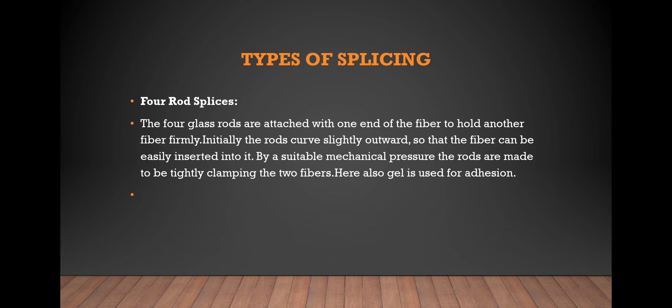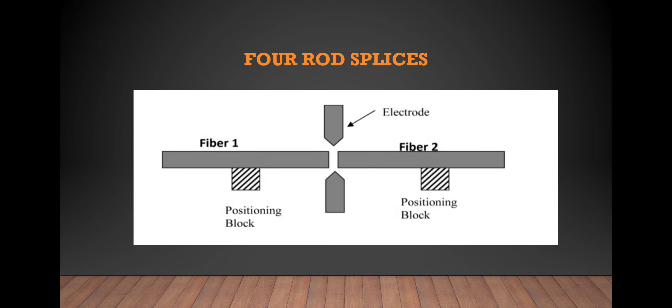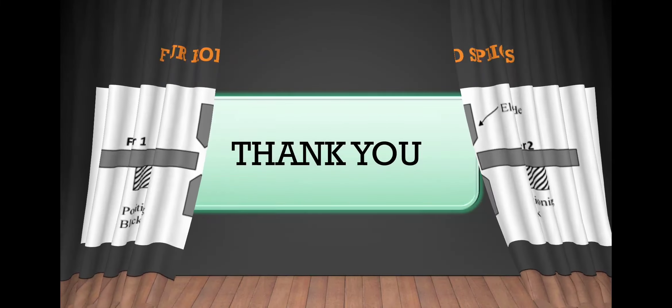Another type is the four rod splice. It uses four glass rods attached at one end of the fiber to hold the other fiber. Initially the rods curve slightly outwards so that the fiber can be easily inserted. Under suitable mechanical pressure, the rods clamp tightly around the two fibers. A wire gel is used as an adhesive. This is the diagram for the four rod splice.